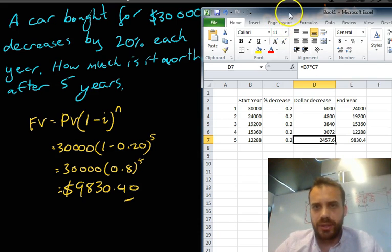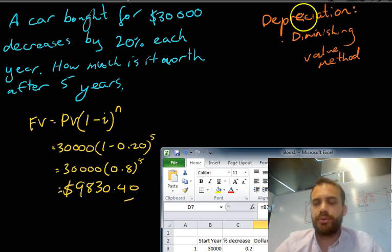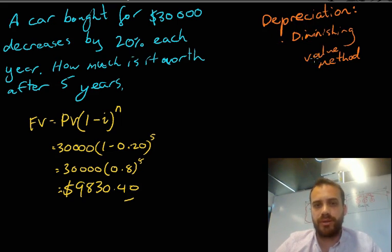All right, that's... I'll just get rid of that. That's the depreciation. That's the diminishing value method. Thanks, guys.